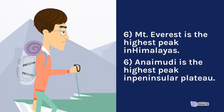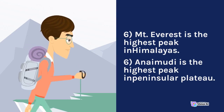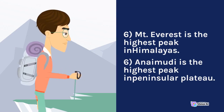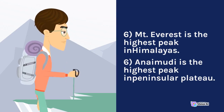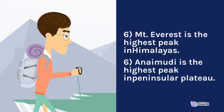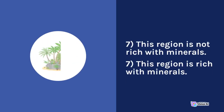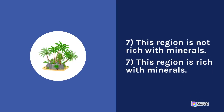Six: Mount Everest is the highest peak in the Himalayas. Six: Anai Mudi is the highest peak in the Peninsular Plateau. Seven: The Himalayan region is not rich with minerals. Seven: The Peninsular Plateau region is rich with minerals.